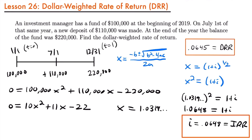Your problems are going to explicitly tell you whether they want the internal rate of return or the dollar-weighted rate of return, so it's usually very obvious which rate you want to solve for. Just remember: the internal rate of return deals with compound interest, but the dollar-weighted rate of return deals with simple interest and is only calculated for a time period of one year. If you want to see more example problems, check out our examples video linked at the end, and feel free to leave questions in the comments.